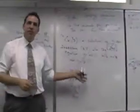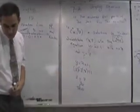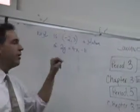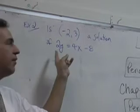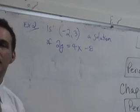Okay. Now, of course, if it doesn't work, right, let's try to find one that doesn't work. Now, of course, solve this problem now. Example 2. Is negative 2, 3 a solution of 2y equals 4x minus 8?